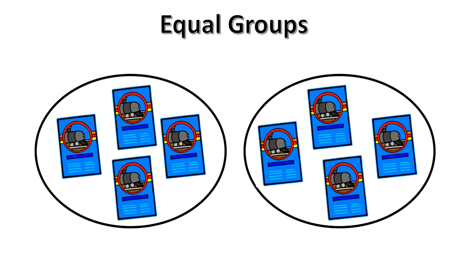Here we see two equal groups of train tickets. They are equal because each group has four tickets in it.